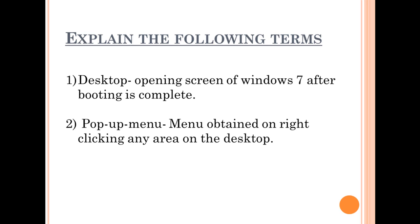Number 2: Pop-up Menu. A Pop-up Menu is the menu obtained on right-clicking any area on the desktop. When we click the right button of the mouse, one menu appears on the screen. This menu is called Pop-up Menu.